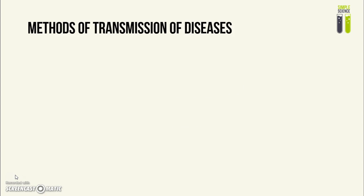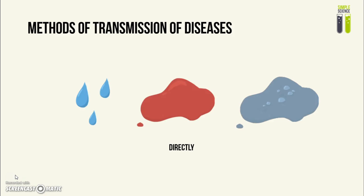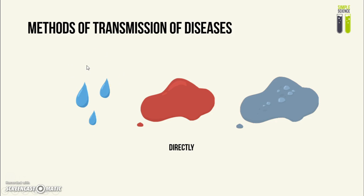You have to remember several ways in which transmission of diseases occurs. The first way is directly, and this can be through blood or any other body fluid. Here I have depicted blood, droplets in the air when you cough or sneeze, and saliva. For example, HIV can be passed on from one host to another via blood contact, and the common cold can be passed on via airborne droplets and saliva.